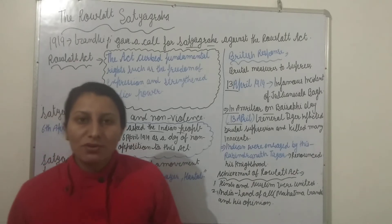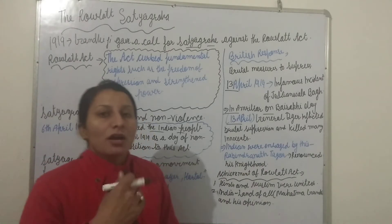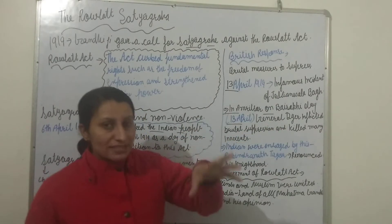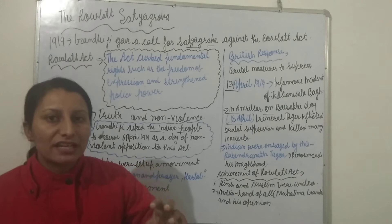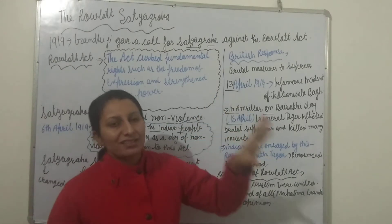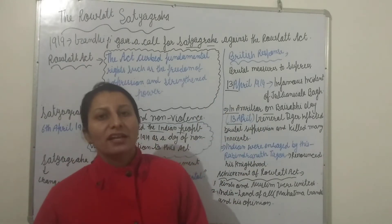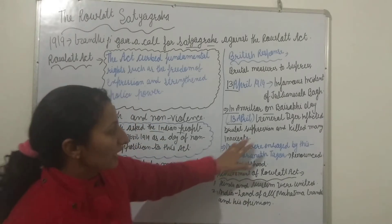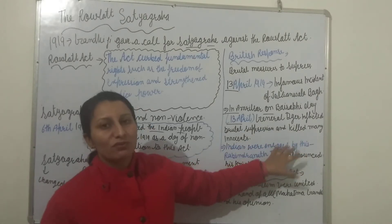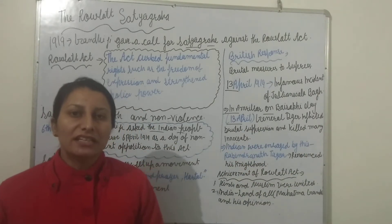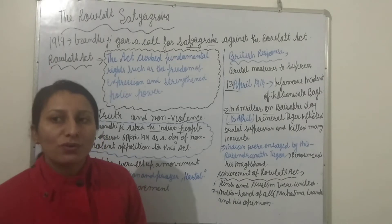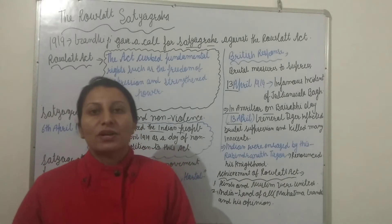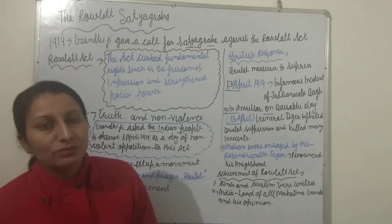General Dyer inflicted brutal suppression and killed many innocents. He ordered the police to shoot directly into the crowd. The people gathered there — men, women, and children — were shot. This incident deeply affected people internally and further turned them against the British. The incident became a great mobilizing force against British rule.